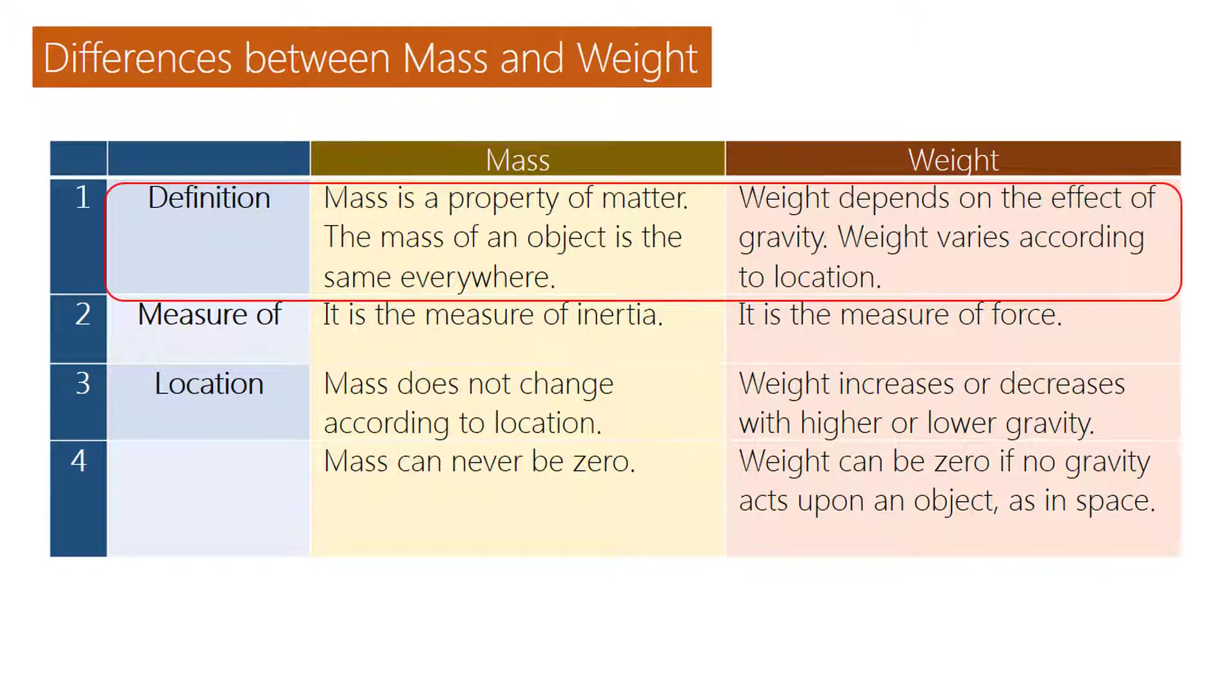Difference between mass and weight. Definition of mass: Mass is a property of matter. The mass of an object is the same everywhere. Definition of weight: Weight depends on the effect of gravity. Weight varies according to location.